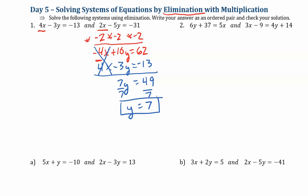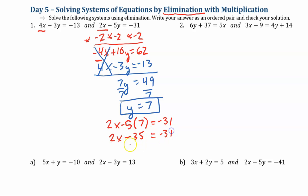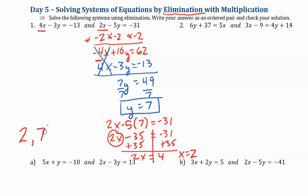That's half of my answer. Now I need to go back and get x. So 2x minus 5 times y — y is 7 — should equal negative 31. Negative 5 times 7 is negative 35, so 2x minus 35 equals negative 31. I'll add 35 to each side. 2x equals 4, so x equals 2. My solution is 2 comma 7.